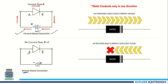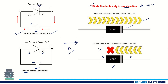In the forward bias condition, current will flow from anode to cathode and the diode conducts. The diode conducts only in one direction from anode to cathode. In reverse bias, the negative terminal is connected to anode and positive terminal to cathode — the diode will not conduct. There is no current flow from cathode to anode. That's why the symbol indicates direction with a triangle.